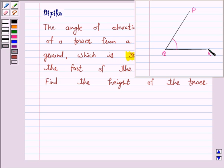So, in this figure, QR is the horizontal line.